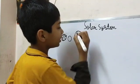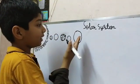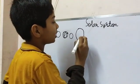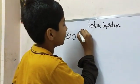This is Jupiter. It is the biggest planet in the solar system.